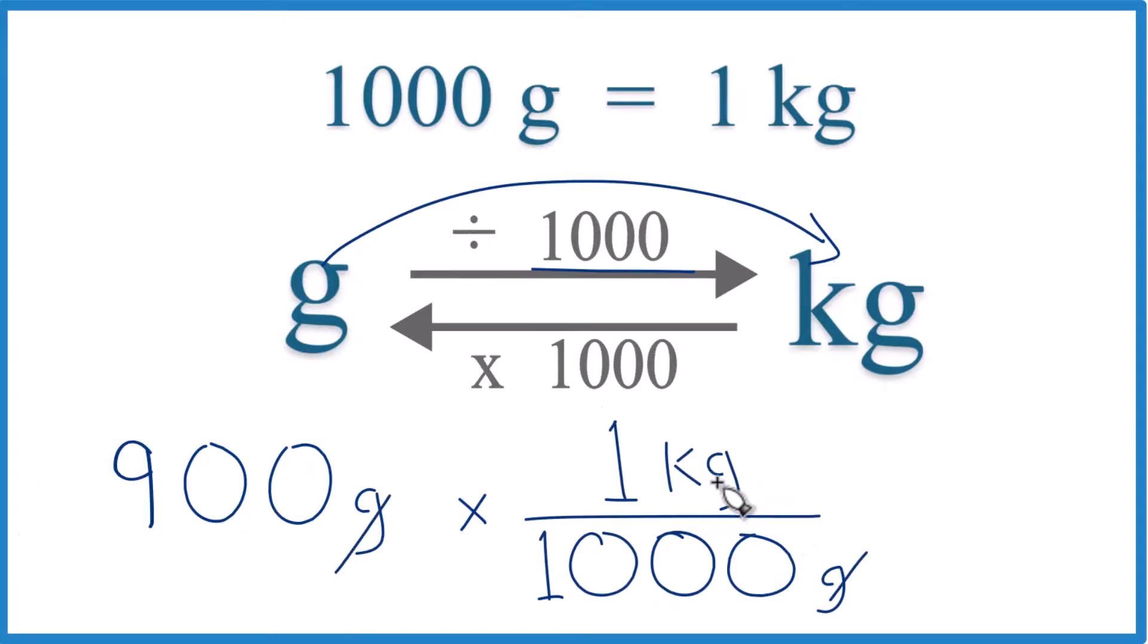These cancel out. We're left with kilograms. That's what we're looking for. 900 times 1 kilogram. That's 900 kilograms divided by 1,000. 0.9 kilograms, just like we found before.